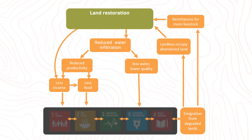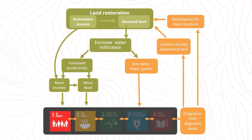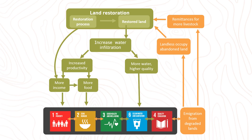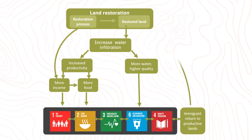For example, it can increase water infiltration into the soil, which can then increase land productivity and create more income and food. This can reduce poverty, hunger, and improve health and opportunities for education. More and better quality of water can also be accessed. With all these, people who are forced to migrate may be able to come back to the productive land.